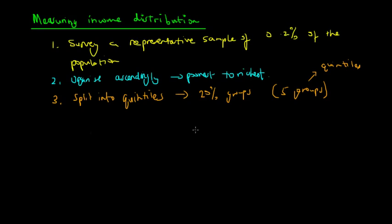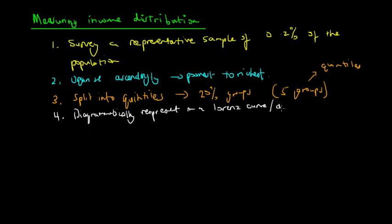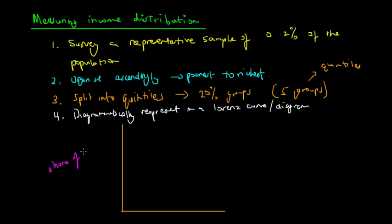After all these calculations, the last step is to diagrammatically represent the data on a Lorenz curve, or more precisely a Lorenz diagram. The Lorenz diagram maps the share of total disposable income — income after taxation — on the y-axis, against the quintiles on the x-axis.